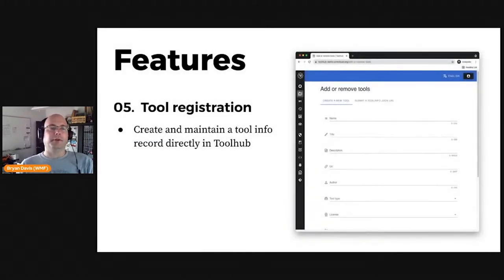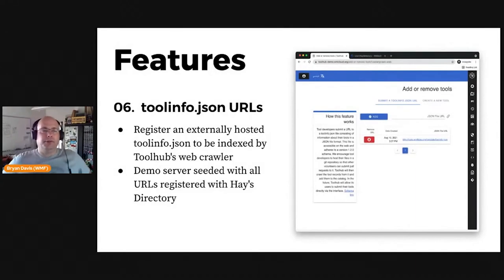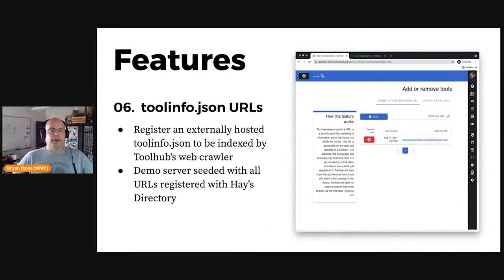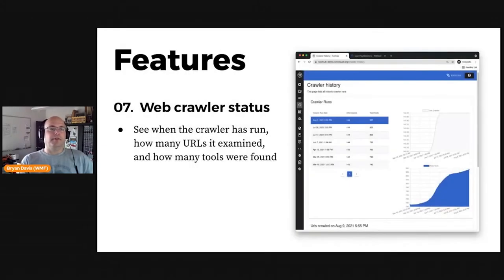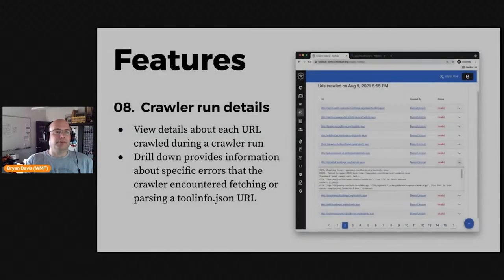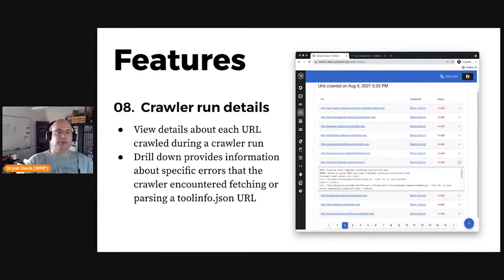Users can create new tool info records using the Add or Remove Tools screen. Tool maintainers can also submit URLs to JSON files which use a Tool Info schema to describe their tools. This is similar to the process used for the existing Haze Directory product. Toolhub will periodically visit these URLs, read the tool records from them, and update the catalog. We have a crawler history screen which displays analytic information about past runs of the URL crawler, including details of errors in reading a URL or parsing its tool info content for each crawler run.